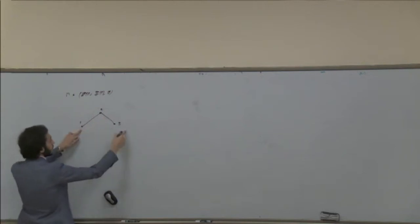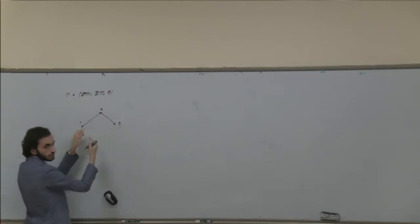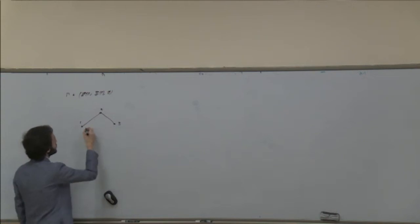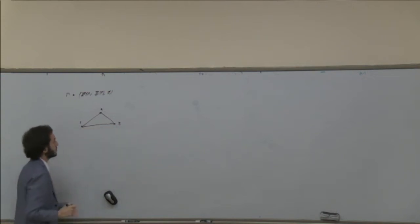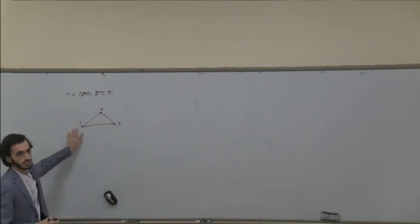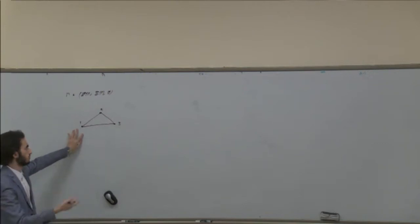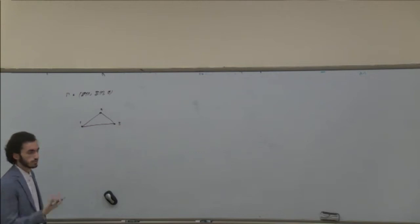Between vertices one and three, you have to move from one to two to three, and likewise for every other pair. If I change this so that it's not a tree, it becomes a cycle. You can think of a tree as a graph without cycles.